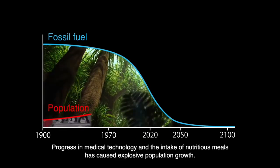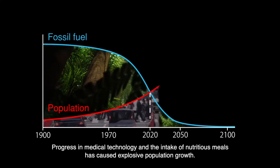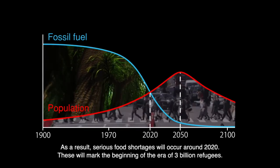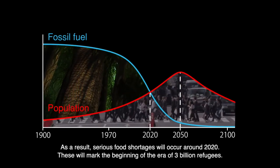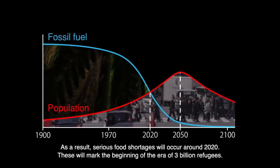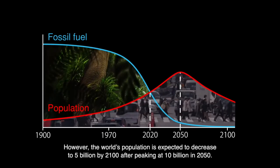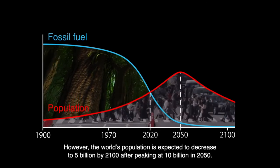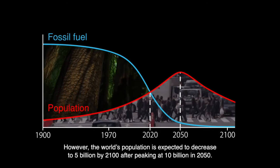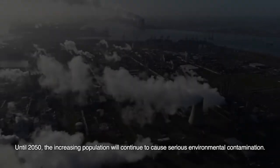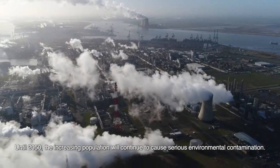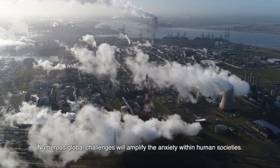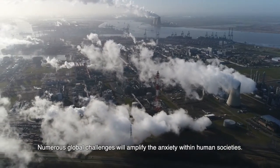Progress in medical technology and the intake of nutritious meals has caused explosive population growth. As a result, serious food shortages will occur around 2020, marking the beginning of the era of 3 billion refugees. However, the world's population is expected to decrease to 5 billion by 2100 after peaking at 10 billion in 2050. Until 2050, the increasing population will continue to cause serious environmental contamination. Numerous global challenges will amplify the anxiety within human societies.